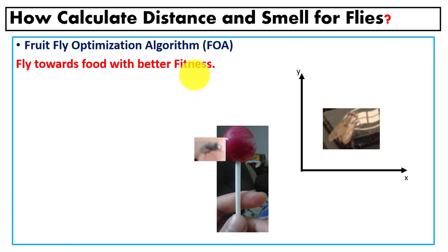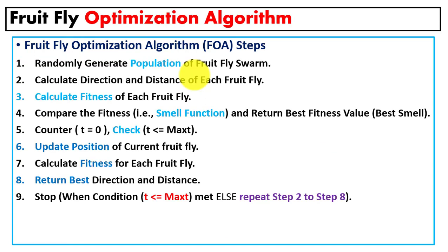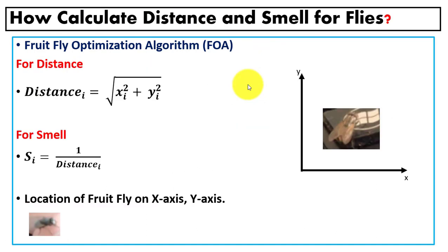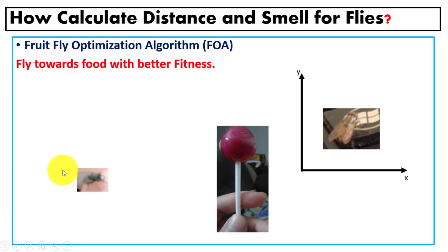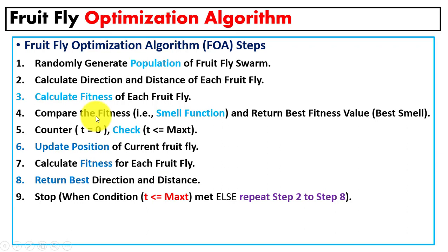In this algorithm, we consider the fly with the minimum fitness value to be closest to the food. The algorithm steps are: first, initialize the population randomly for the fly swarm. Then compute the direction and distance for each fruit fly using the equations. We compute the distance and smell for each fruit fly, then compute the fitness value for each fruit fly. Finally, we compare the fitness values and return the best fitness value as the best smell.